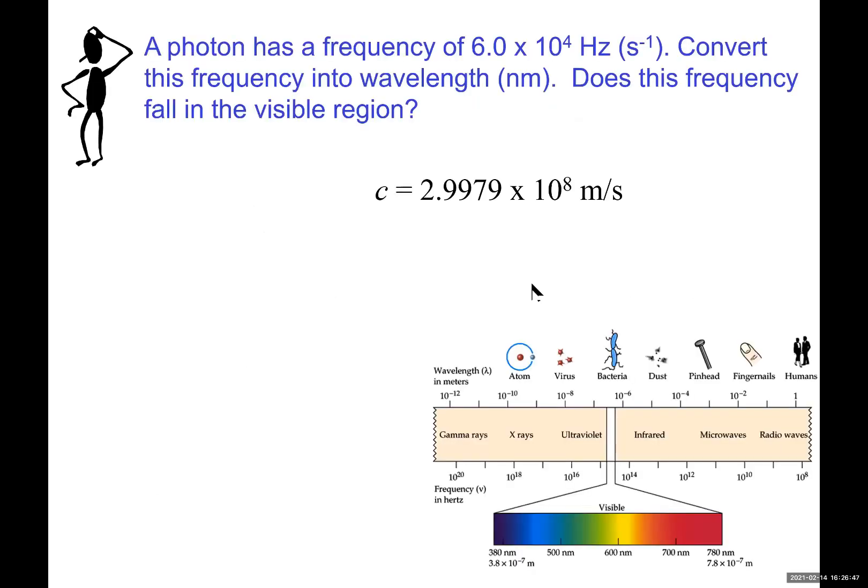Similar to the previous problem. A photon has a frequency of 6.0 times 10 to the power of 4 Hertz. That's number of frequency per second. Can you convert frequency into wavelengths in nanometers? And can you tell us if this frequency falls in visible region or not?